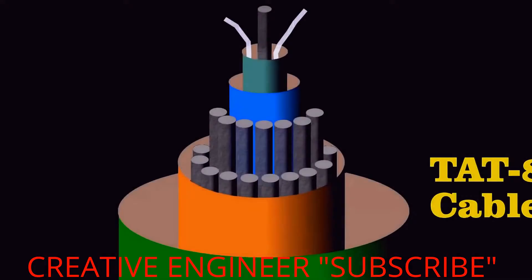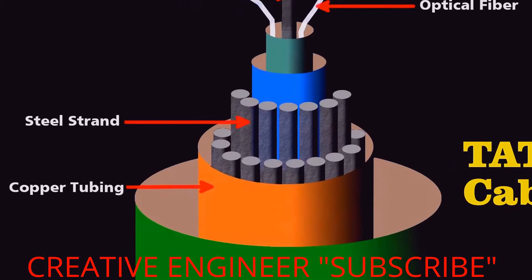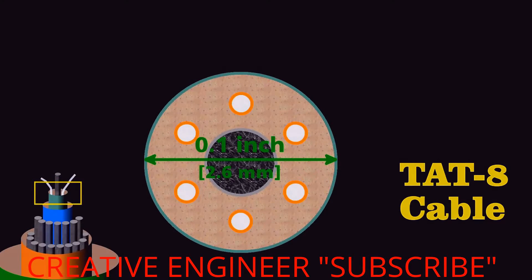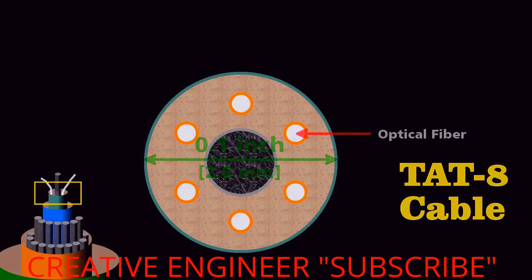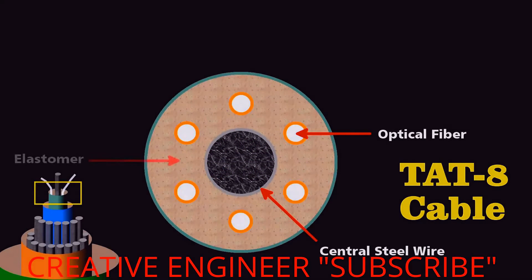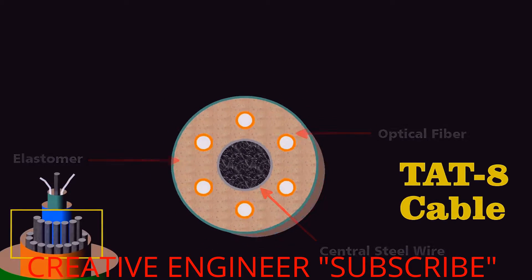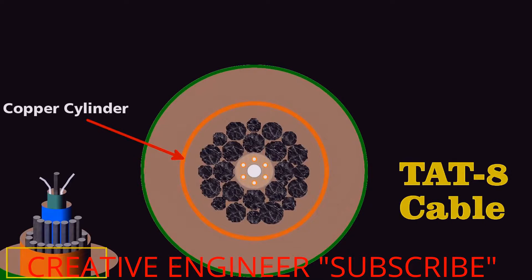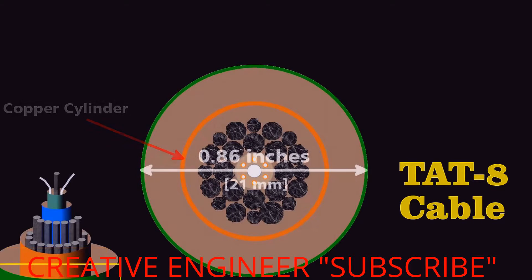Engineers designed the cable carefully to survive on the ocean floor. At its center lies the core. Less than a tenth of an inch in diameter, it contains six optical fibers wrapped around a central steel wire. They embedded this in an elastomer to cushion the fibers, surround it with steel strands,